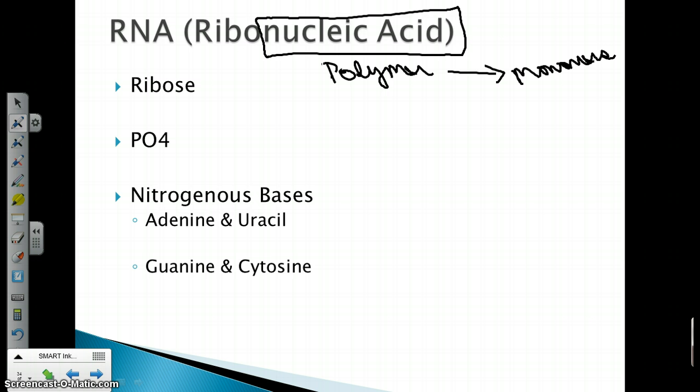What ribose is, is a type of sugar. And it is a 5-carbon sugar. So a brief diagram would look something like this: 1, 2, 3, 4, 5. So there'll be a carbon here, here, here, here, and here. It's a 5-carbon sugar.